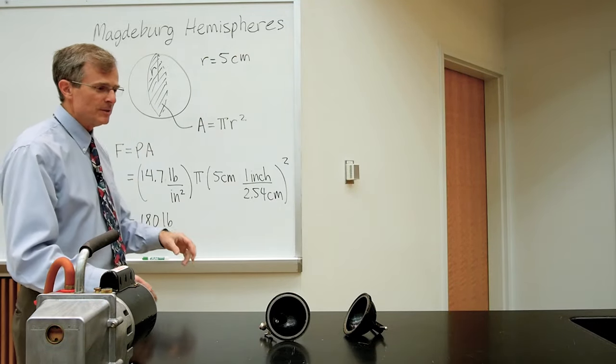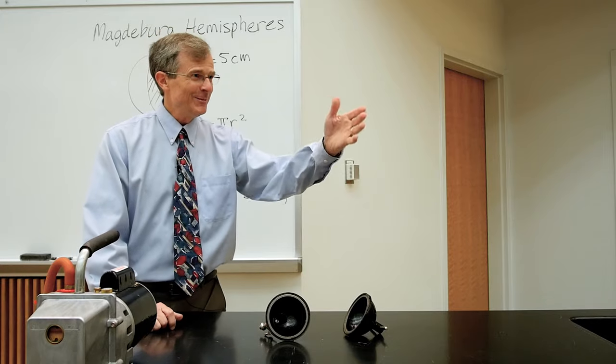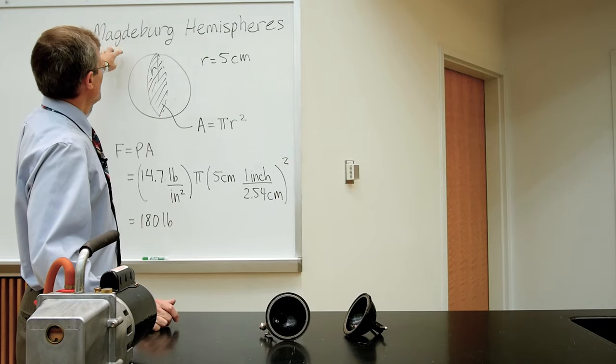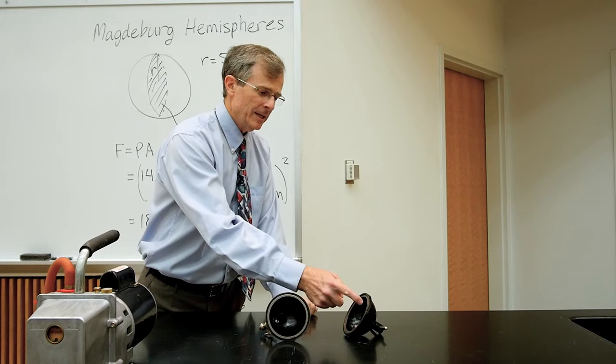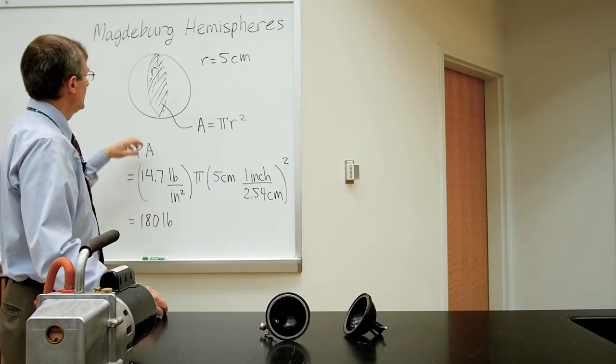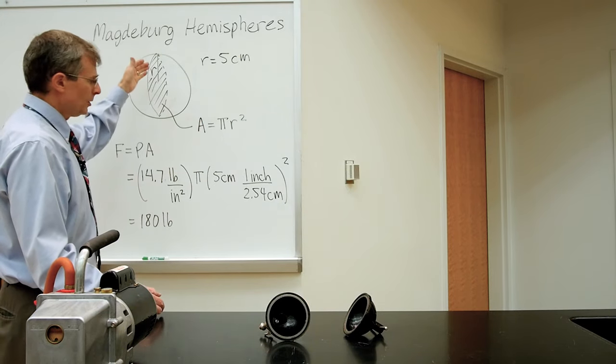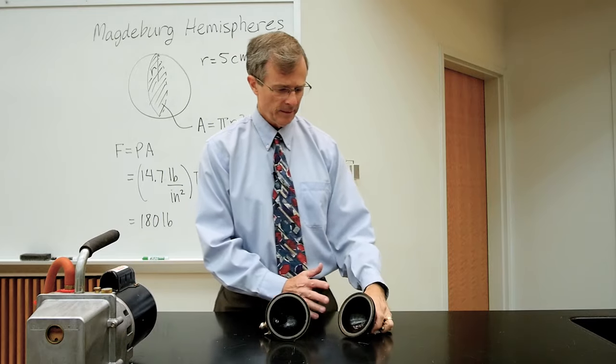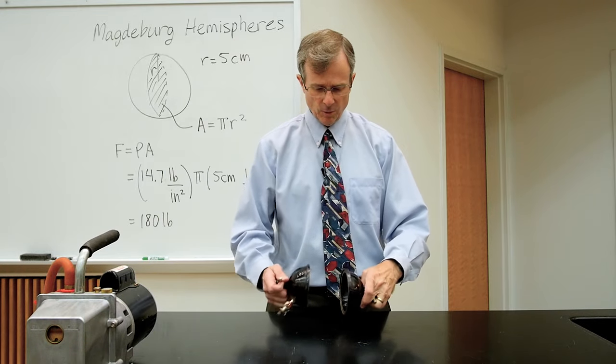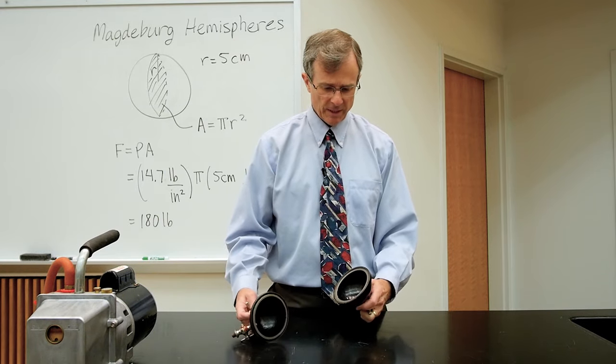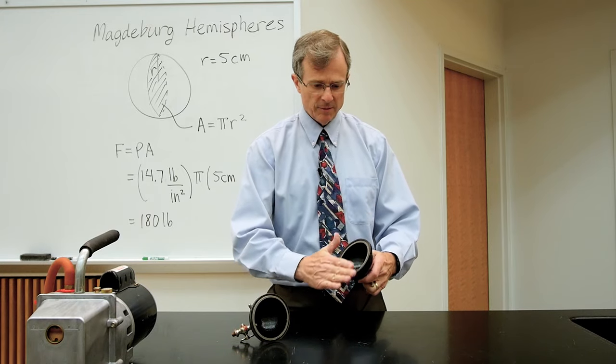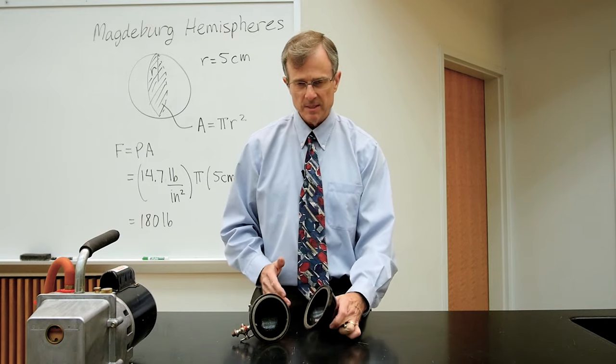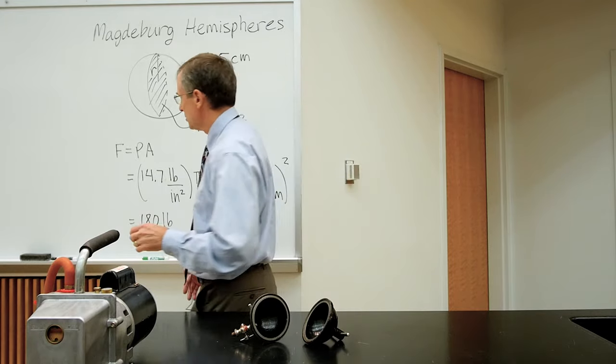We have hemispheres that are about 5 centimeters in radius. The cross-sectional area of this disk where they mate together—I'm talking about not the area of the outside of the sphere, but the area of this flat disk where they mate together—is just pi r squared.